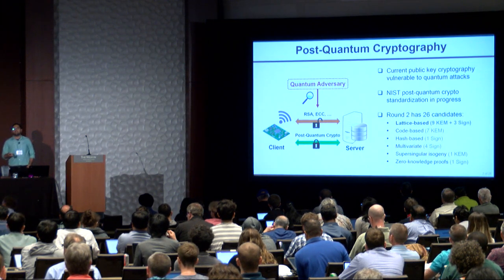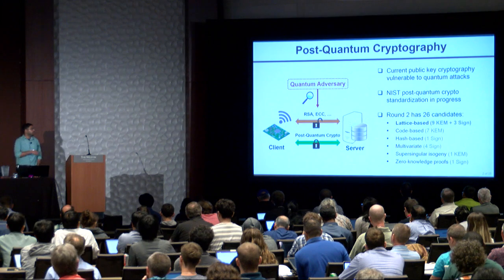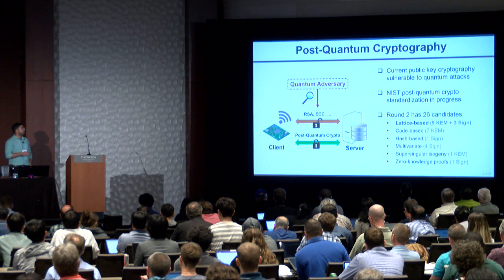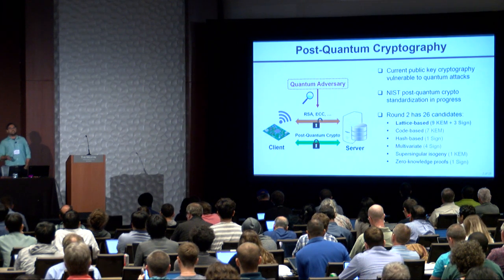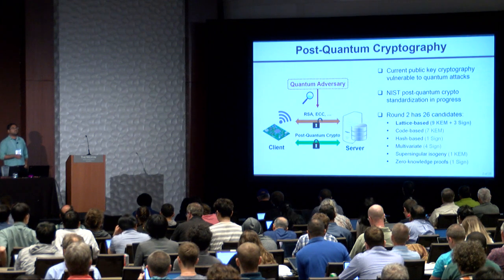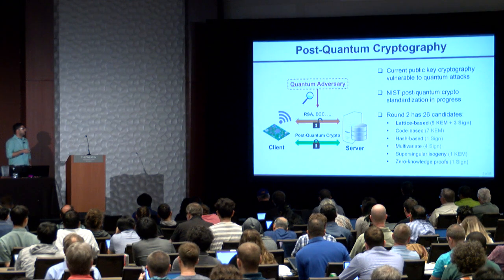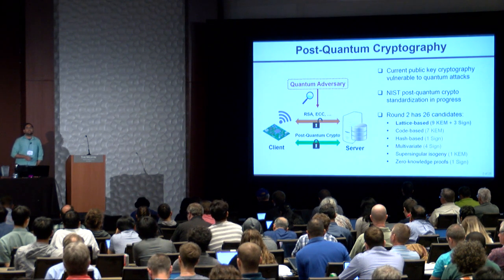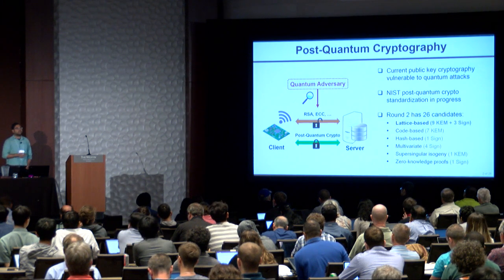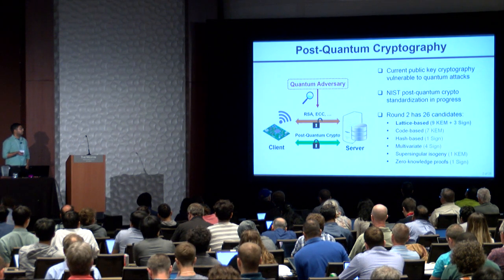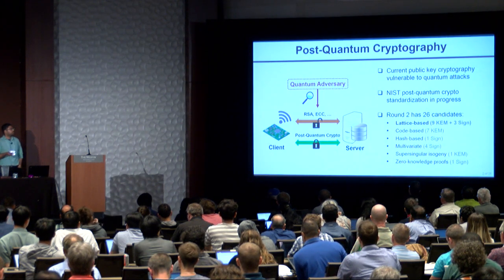NIST has been standardizing post-quantum crypto recently, and round two has 26 candidates which can be divided into broad categories. Lattice-based cryptography accounts for almost half of them, and this includes both key encapsulation and digital signature schemes. This was our motivation behind building dedicated hardware for lattice-based cryptography with configurable parameters, and we use it to demonstrate five round two candidates from the NIST standardization, enabling post-quantum crypto for low-power embedded devices.